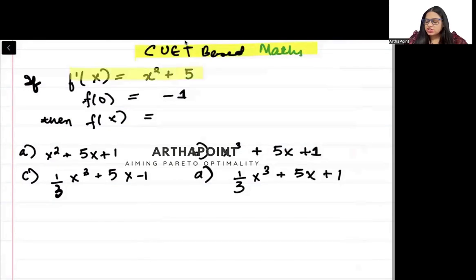It says f'(x) is x² + 5 and f(0) is -1 and you need to find out f(x).